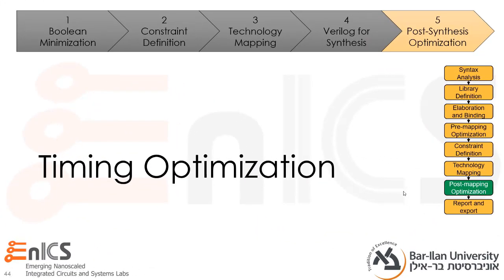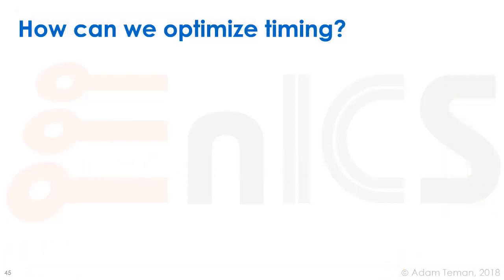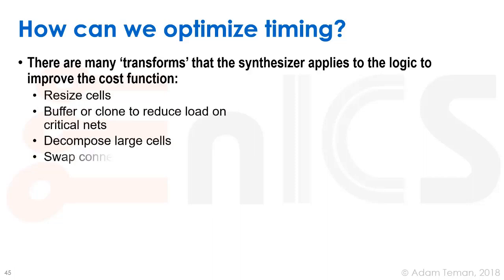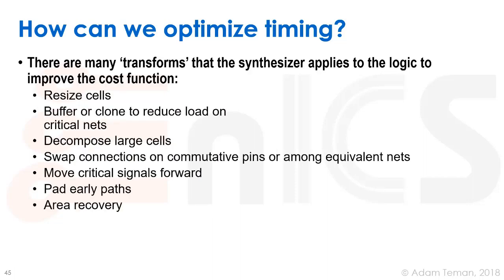Our final section in this lecture will go into timing optimization. How can we optimize timing? There are actually many transforms that the synthesizer can apply to the logic to improve the cost function: resizing cells, buffering or cloning to reduce load on critical nets, decomposing large cells, swapping connections on commutative pins, moving critical signals forward, padding early paths, and recovering area. There's a lot of different heuristics that the synthesizer applies.